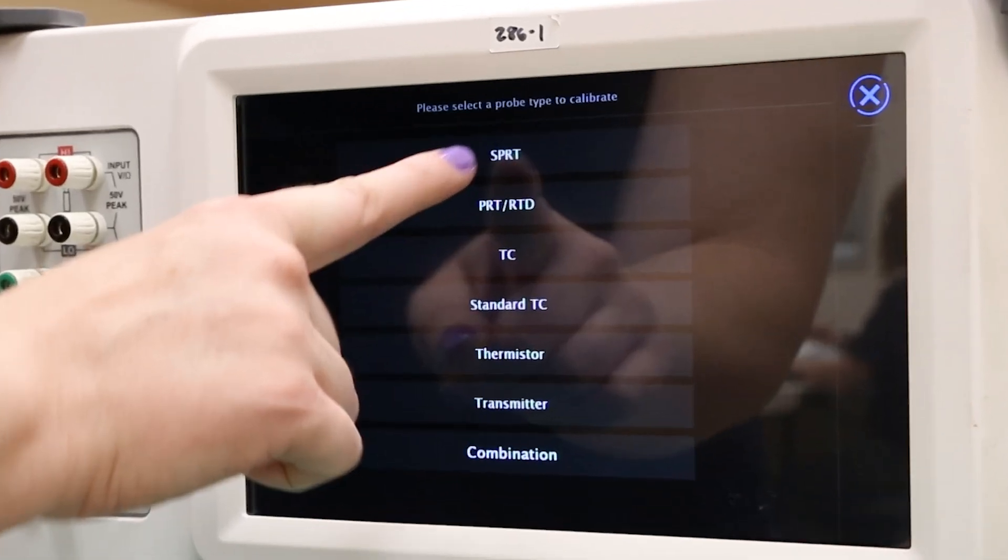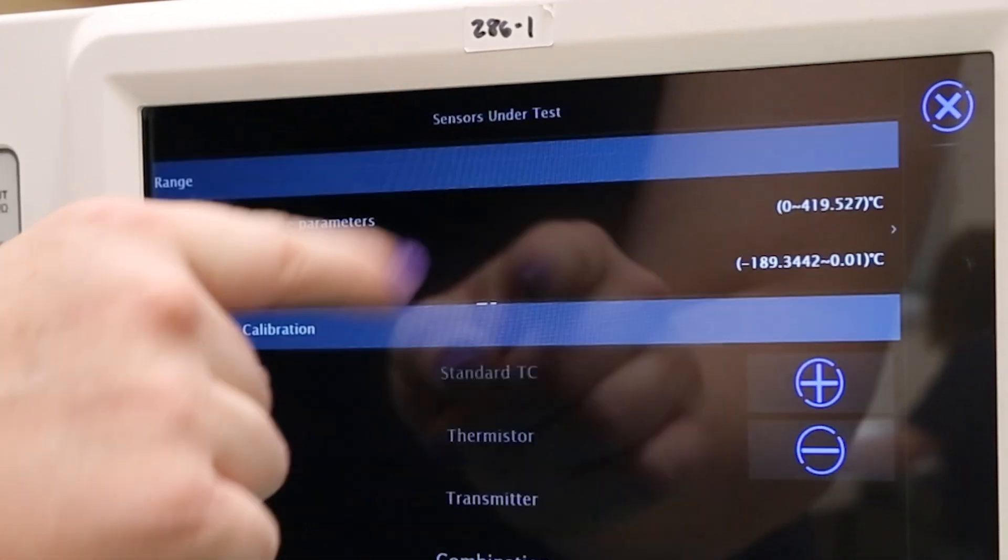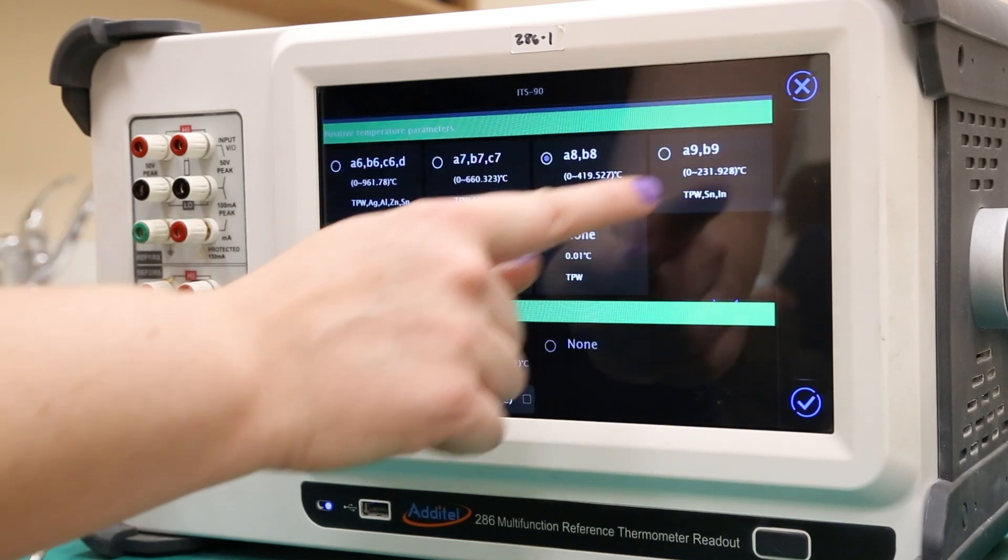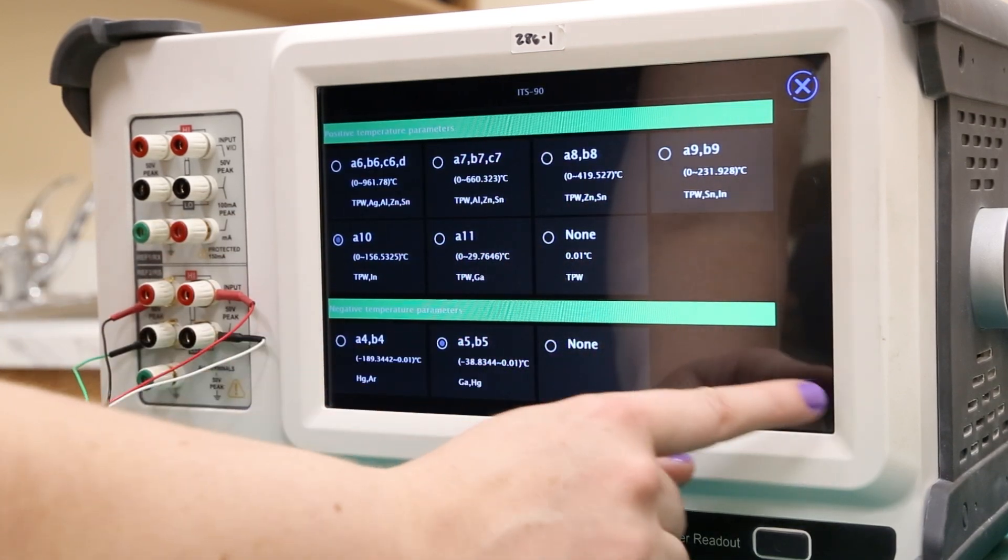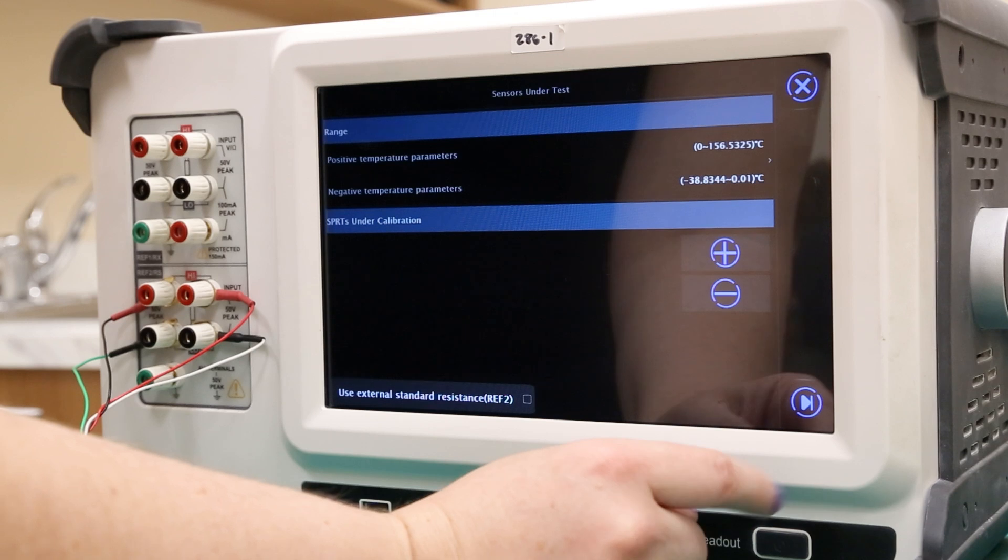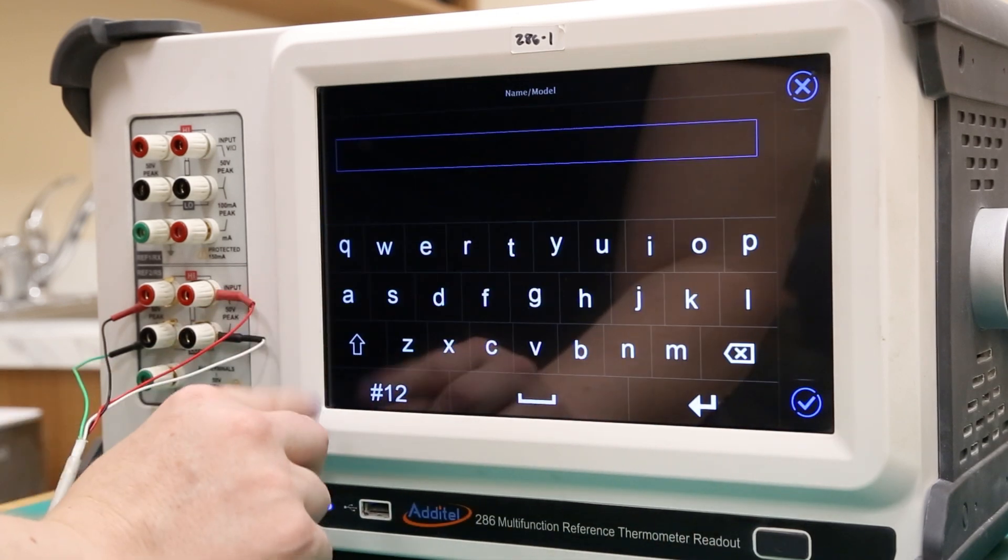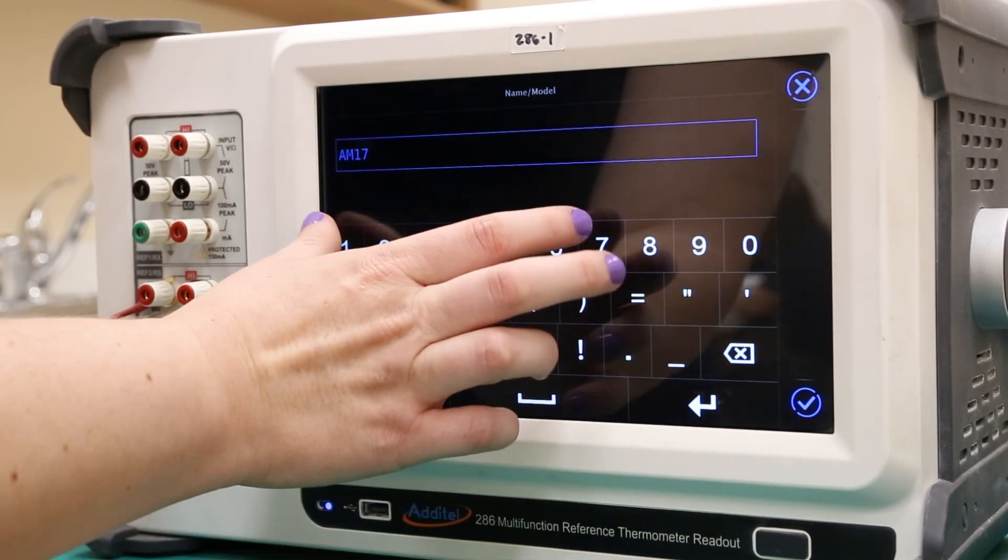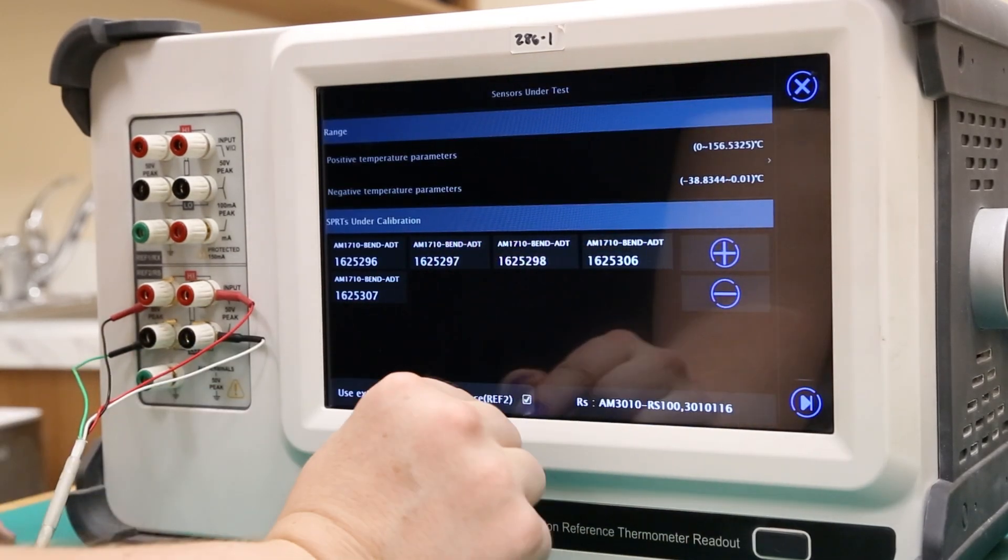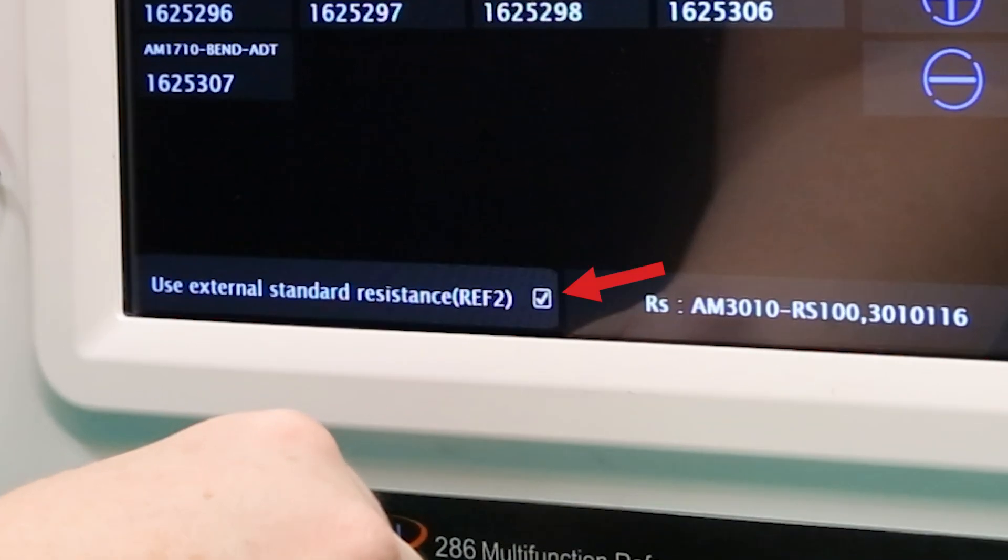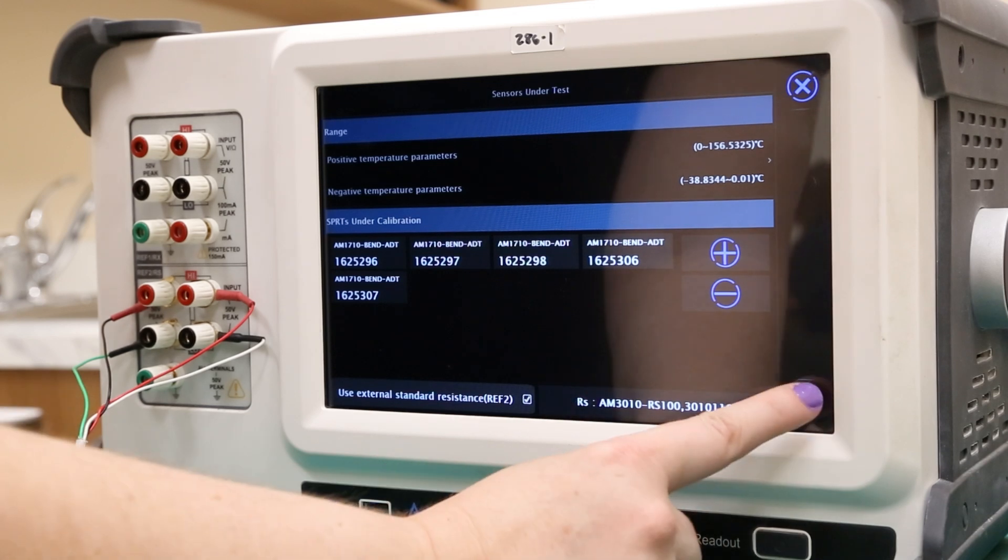Select the probe type, in this case SPRT. Here we can choose the ITS-90 subranges we will be calibrating, which are 5 and 10 as mentioned previously. Next, we will add the five SPRTs that we will be calibrating by pressing the plus icon. The name and serial number of the probe should be recorded to ensure accurate traceability. Once all probes have been entered, we will check the use external standard resistance option before pressing next.